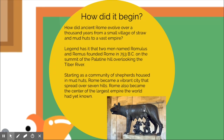Rome started as a community of shepherds in mud huts, then grew to be a vibrant city that spread over seven hills. After they built up a very powerful army, they became the center of the largest empire the world had yet known, and ended up conquering most of Europe.